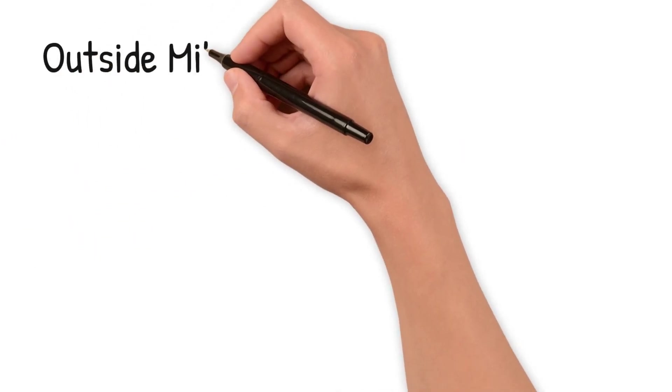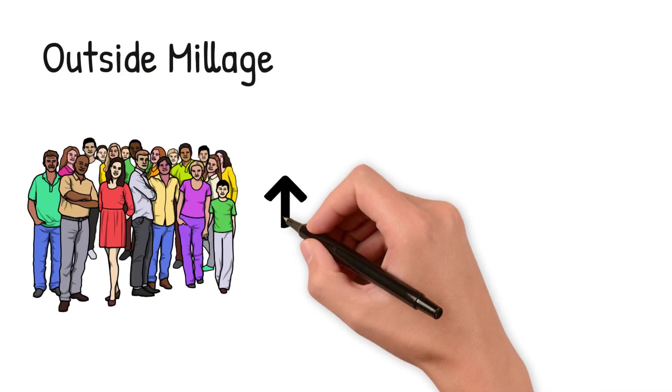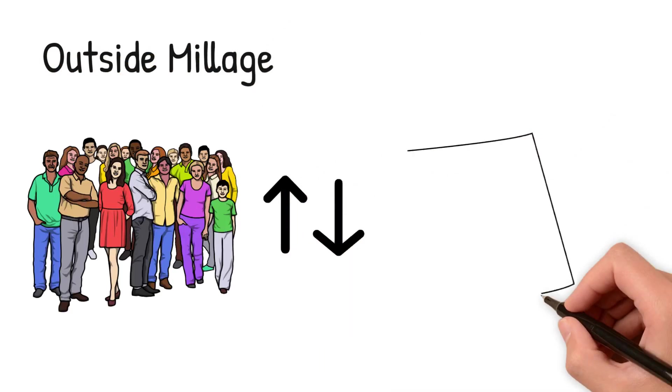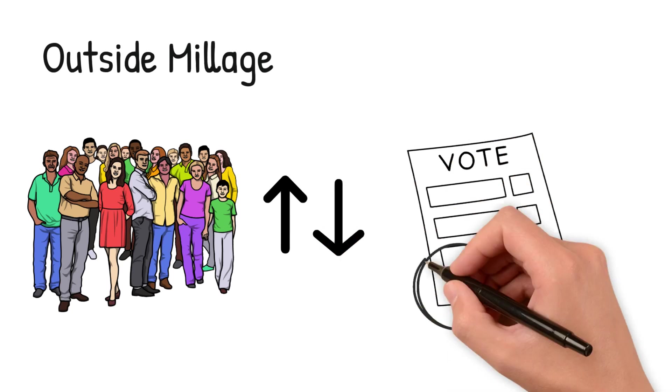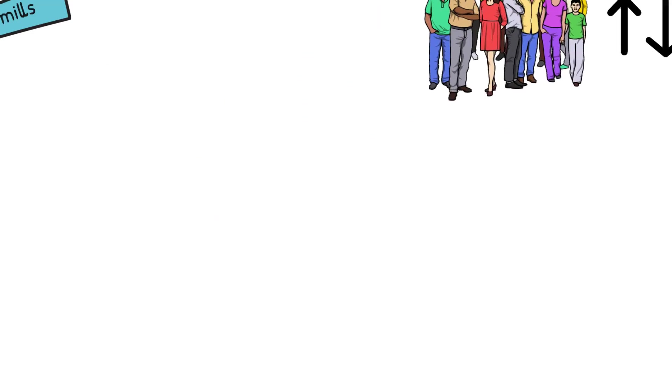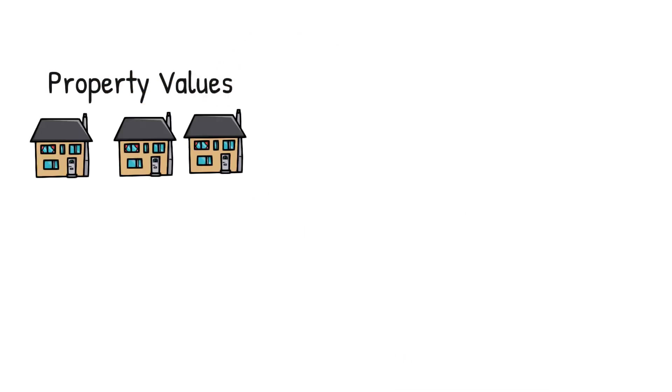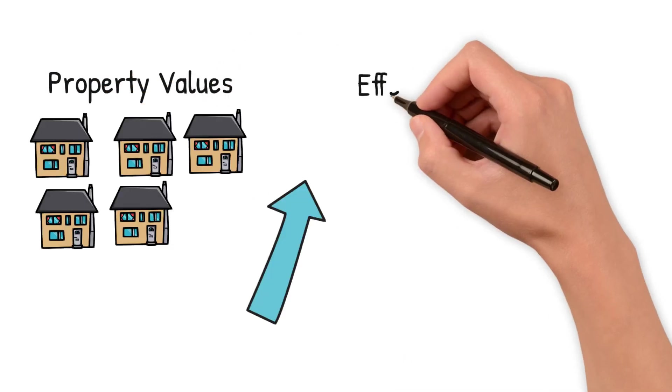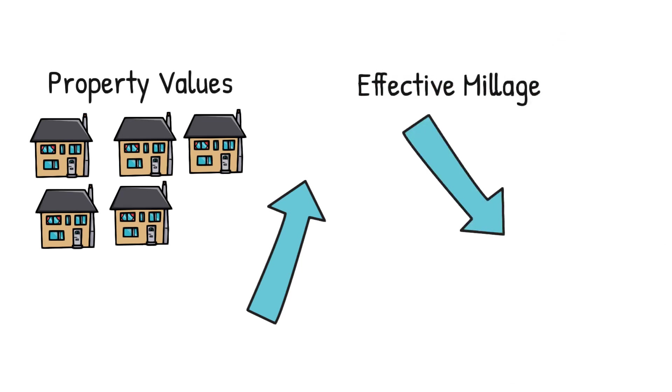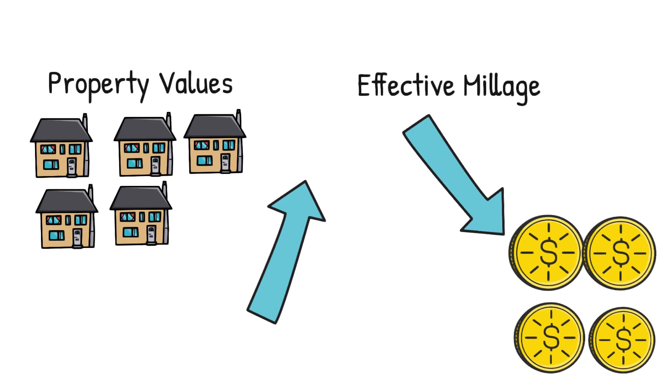Outside millage, or what the voters approve, can actually change. This is because the amount of tax money my school collects can't be more than what the voters agree to. For example, if the value of the houses in my school district go up, the Butler County Auditor would decrease Lakota's effective millage. That means my parents and others in our community would pay less in outside millage for Lakota.